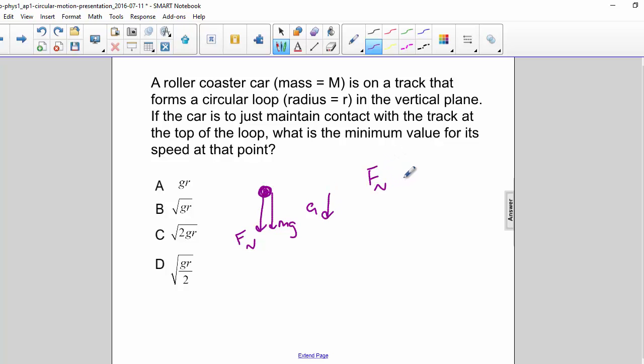So normal force plus mg equals ma. Now for the minimum value of the speed, our normal force is equal to zero. So we have mg equals, and a is equal to v squared over r.